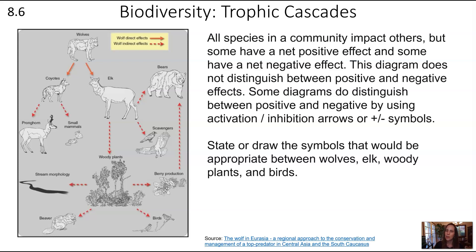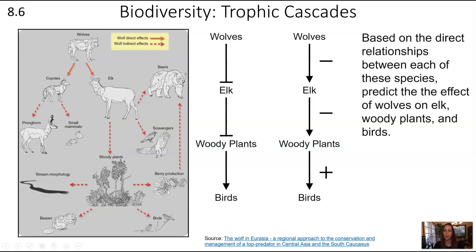I want to give you practice thinking about net positive and net negative relationships by using symbols. Wolves negatively impact elk — you can show that with an inhibition arrow or a negative sign. Elk negatively impact woody plants, and woody plants positively impact birds.